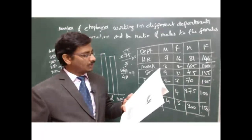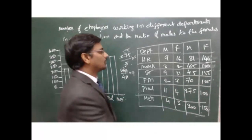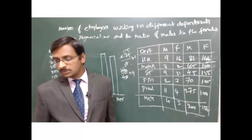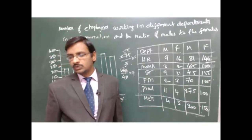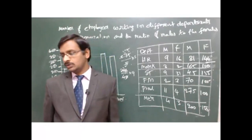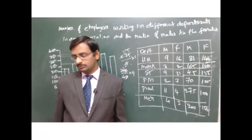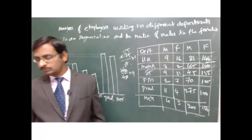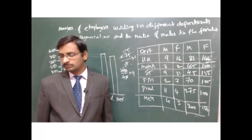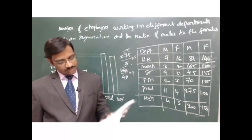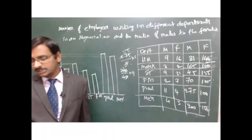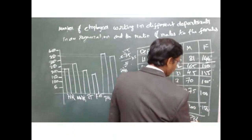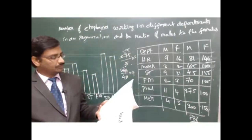Question: What is the total number of males working in all the departments together? Adding up: 81 plus 165 plus 45 plus 70 plus 275 plus 200 equals 836. So the first question answer is 836.